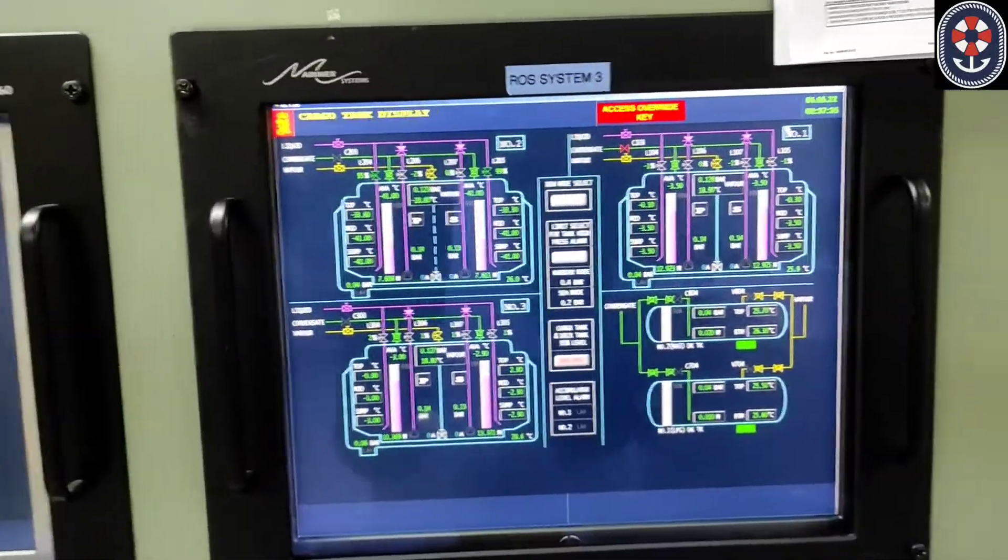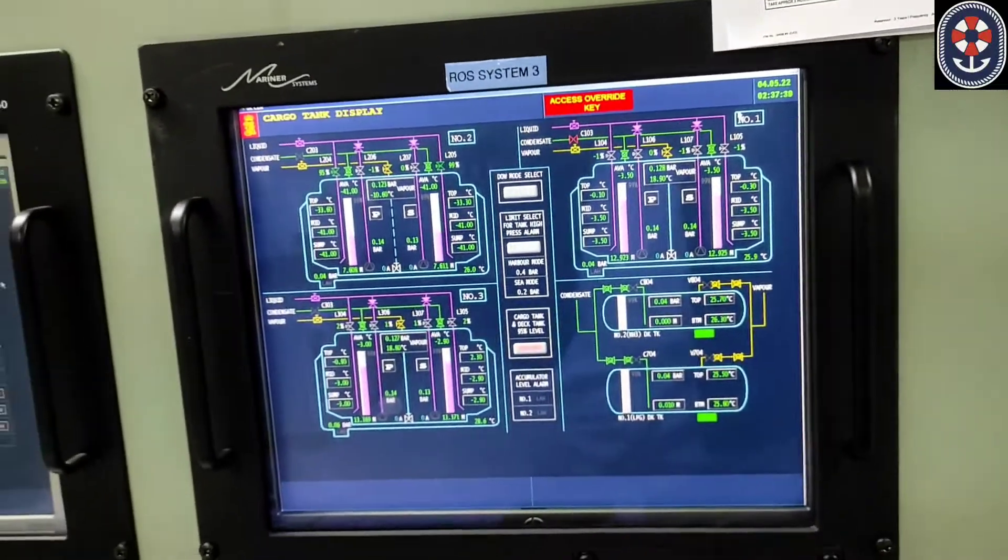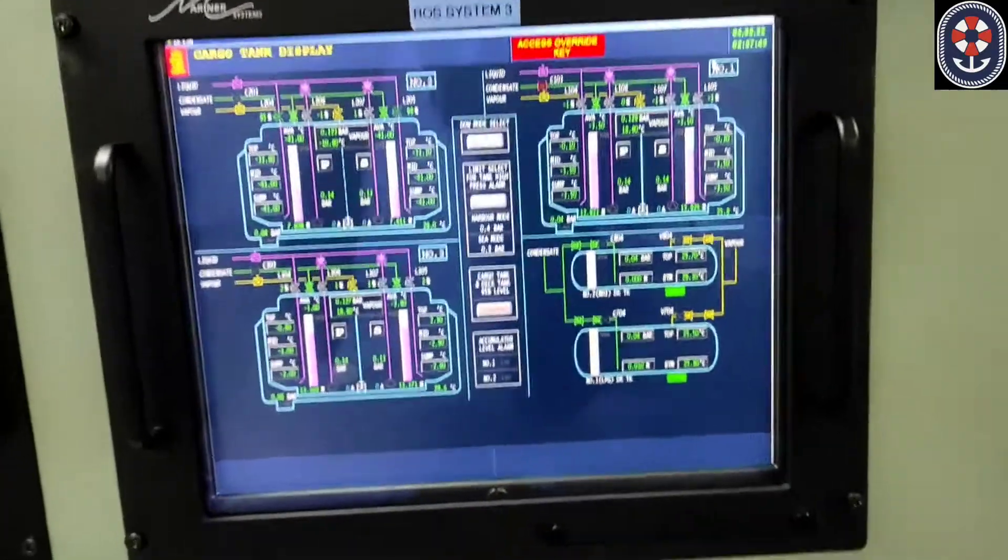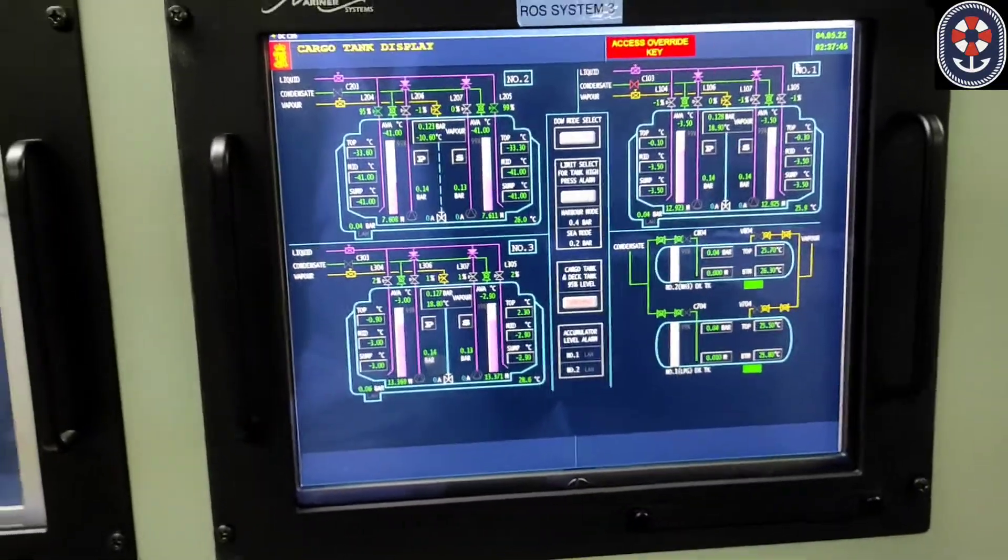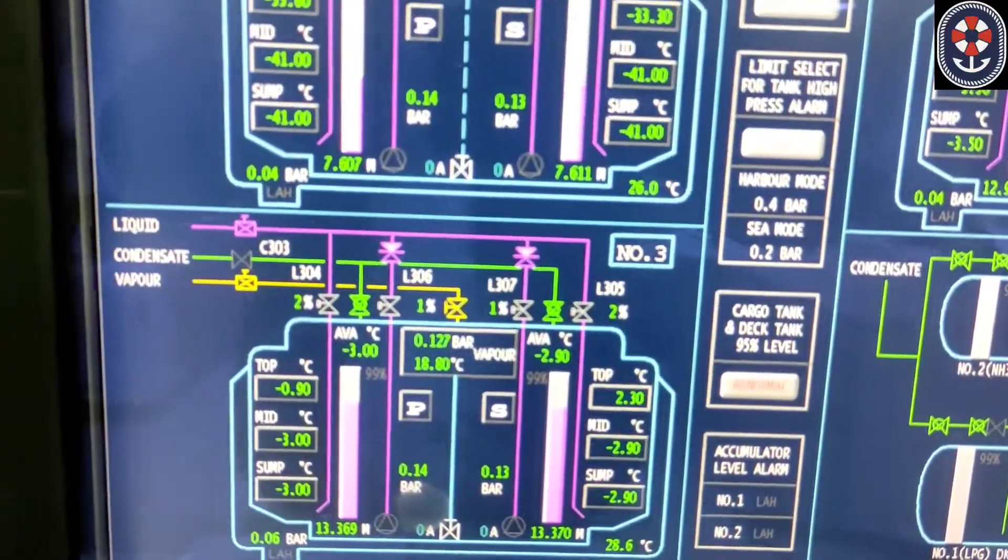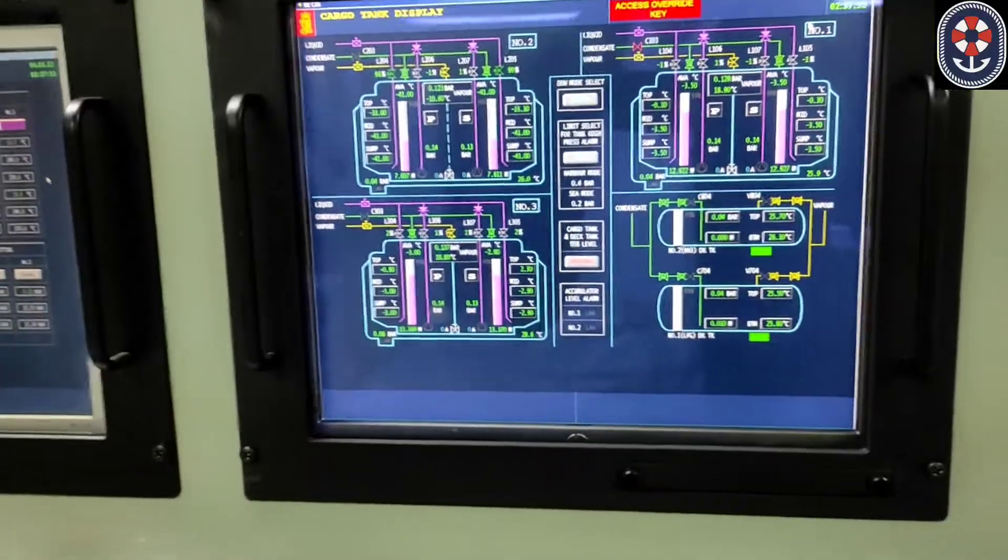Basically, we are loading in tanks one, two, and three. Right now we have loaded propane in tank two, and in tanks one and three, we have loaded butane. So basically in gas tankers, we have to monitor the temperatures and pressure. This propane temperature is maintained at minus 41 degrees Celsius, whereas butane is maintained at minus 3, so they remain in their liquid states.